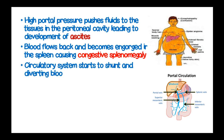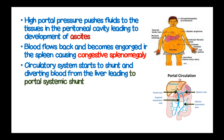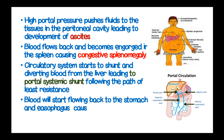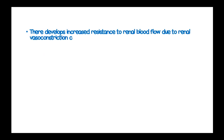Collateral systems start to shunt and divert blood from the liver, leading to development of portal-systemic shunts which follow the path of least resistance. Blood will start flowing back to the stomach and esophagus, causing gastric and esophageal varices. There also develops increased resistance within the renal blood flow due to increased renal vasoconstriction, causing low filtration, which results in hepatorenal failure.